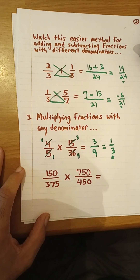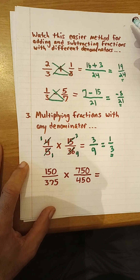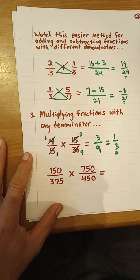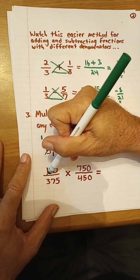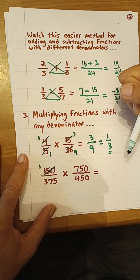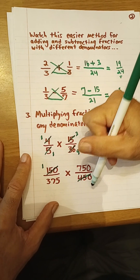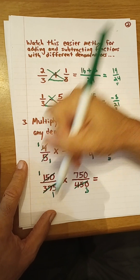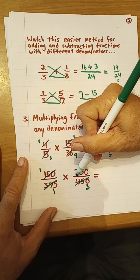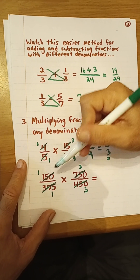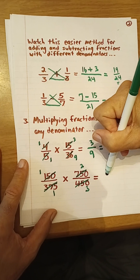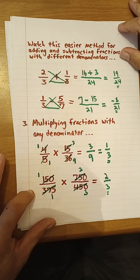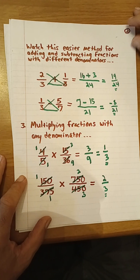Now let's look at this more complex example below — quite ugly fractions. But again, if we reduce in the direction of the multiplication sign, it becomes manageable. 150 goes into 150 once; 150 goes into 450 three times. 375 goes into 375 once; 375 goes into 750 two times. Multiplying numerators: 1 times 2 is 2, over 1 times 3 is 3, and we're left with 2/3.